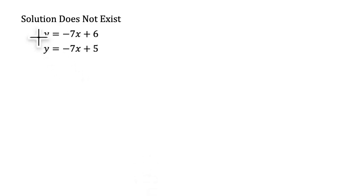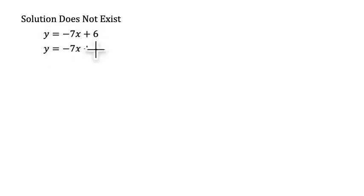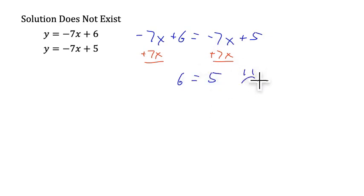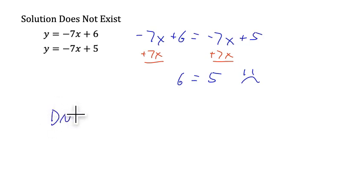We can also have the situation where no solution exists. Here both equations say y equals, so we set the two expressions equal to each other since they both equal y. The first expression, negative 7x plus 6, is set equal to the second expression. Adding 7x to both sides, we get 6 equals 5. Since 6 never equals 5, there is no solution — we can say the solution does not exist, or type 'DNE' on a computer.